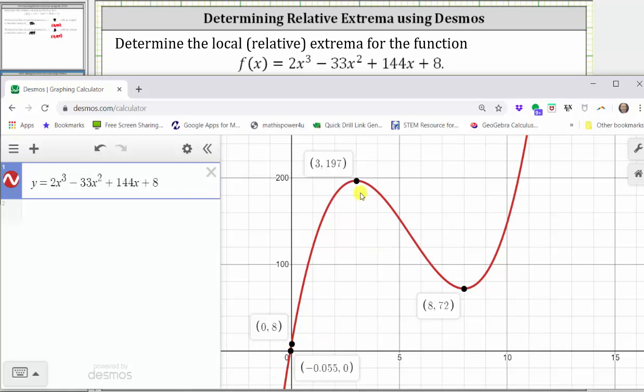So this high point has an ordered pair of three comma 197, which means at x equals three, we have a relative maximum of 197, and this low point has an ordered pair of eight comma 72, which means at x equals eight, we have a relative minimum of 72.